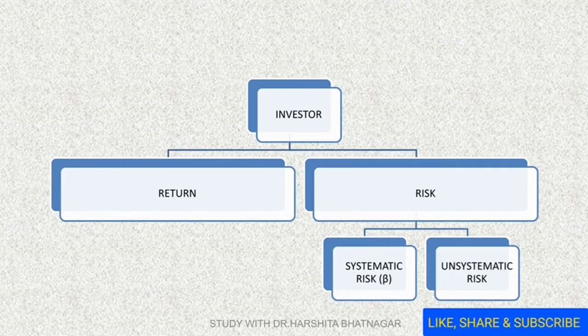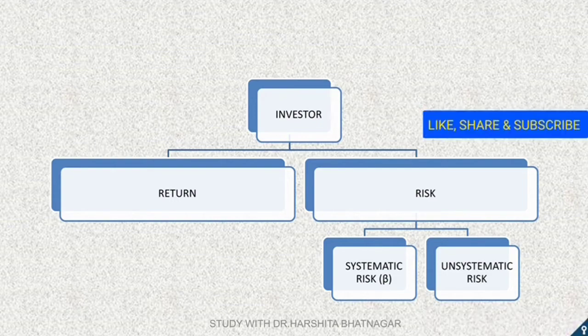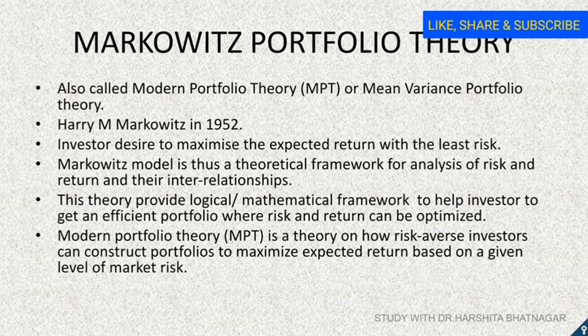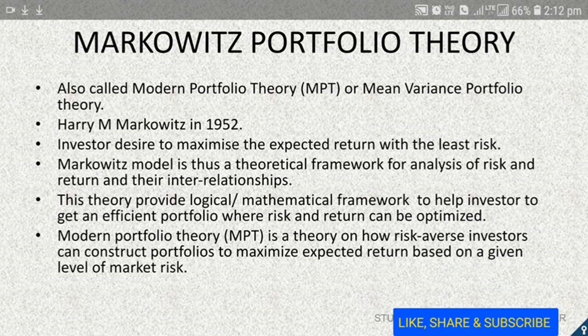Basically, investors look for two important aspects: first is risk, and second is the reward. Risk is of two types — one is systematic risk and the other is unsystematic risk. Systematic risk is denoted by beta; it cannot be controlled and it impacts the complete system. Unsystematic risk is individual risk that can be reduced through diversification.